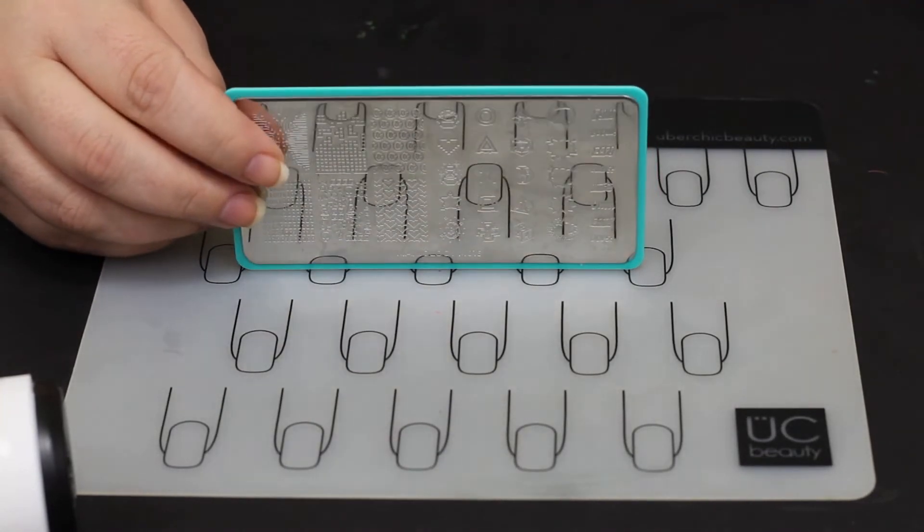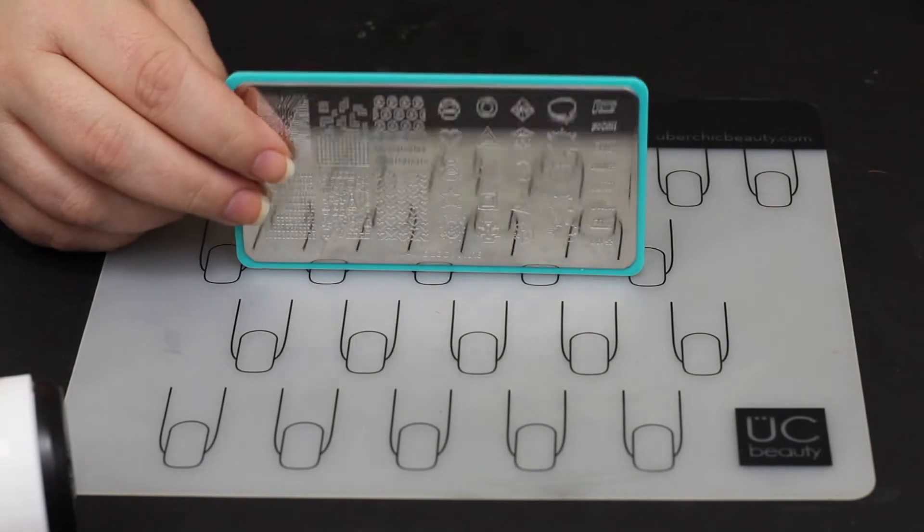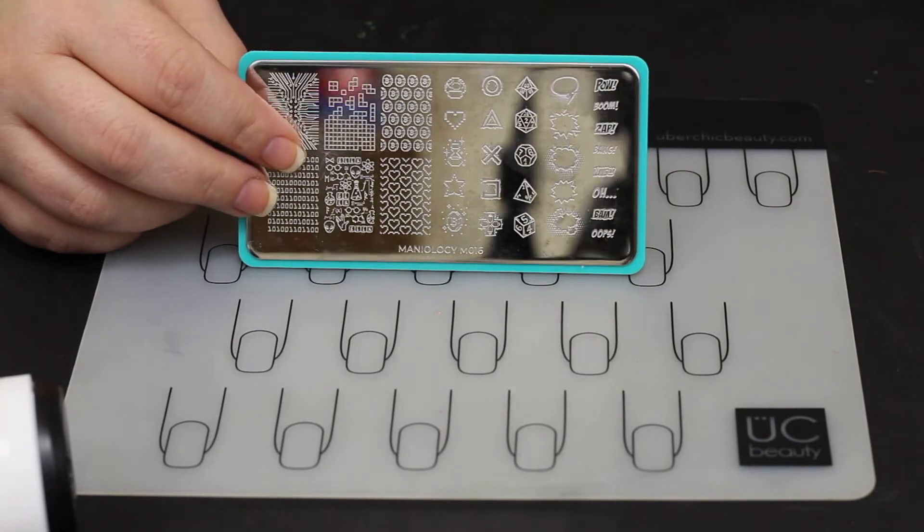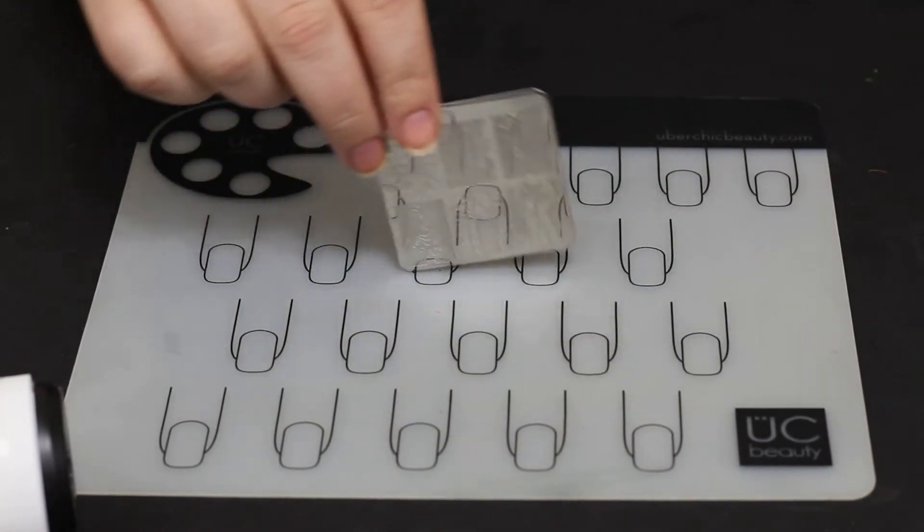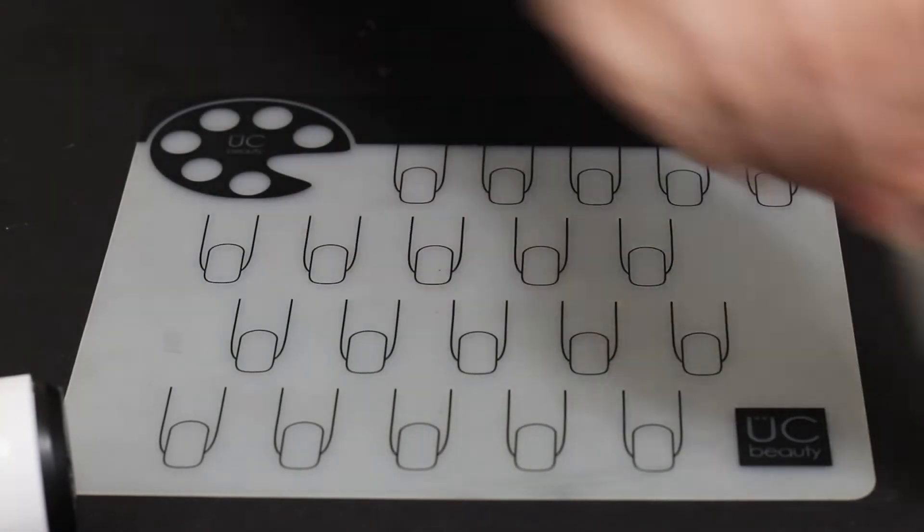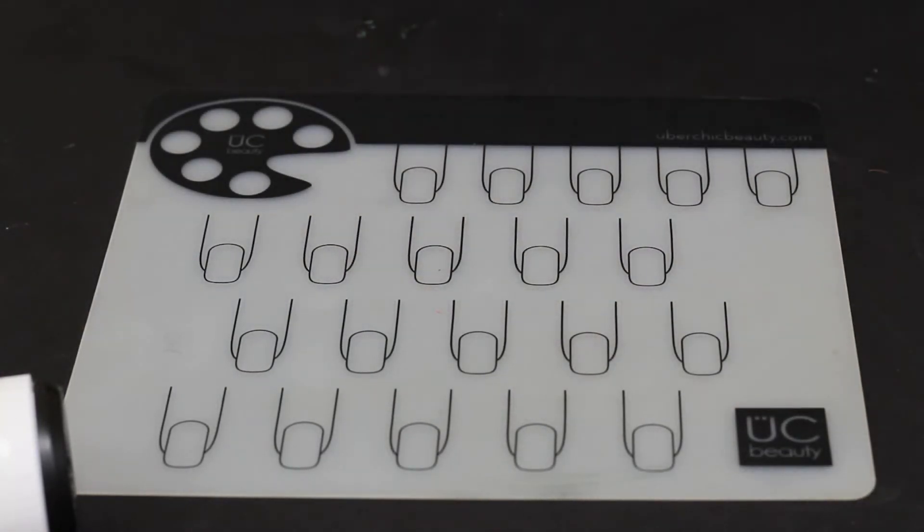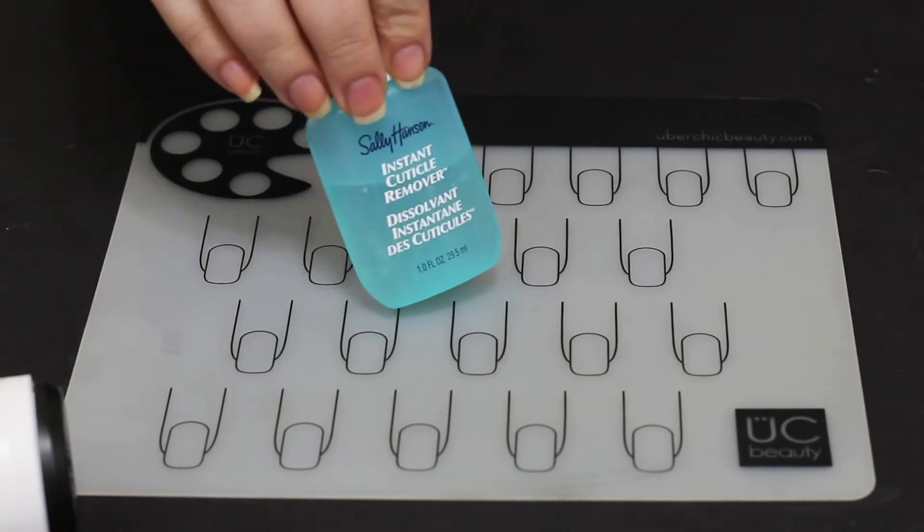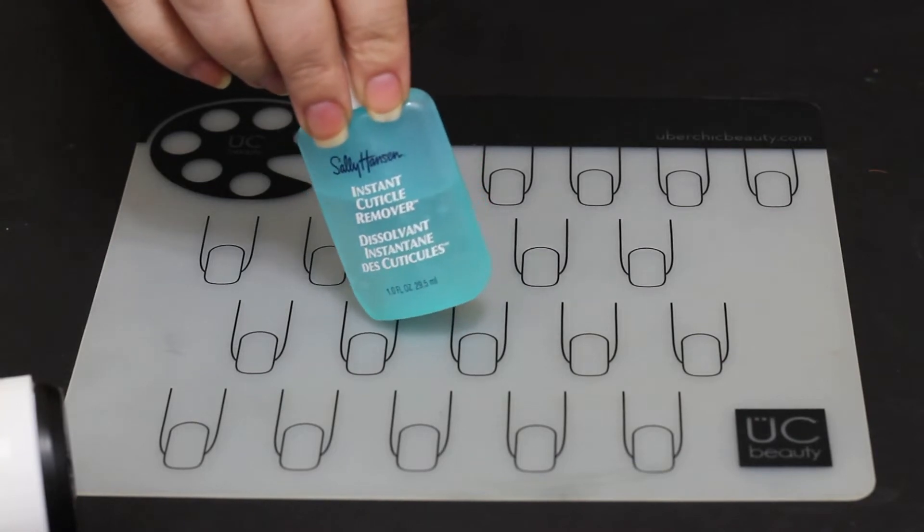And then after those different polish collections, of course, we have to go with stamping plates. For me, these are mandatory. I love stamping. Ever since I first saw it, I was like what is this and how do I do it? I have been obsessed from day one. And you can get different size stamping plates. They have giant ones that have a hundred patterns on them. I like the ones from Maniology, both the small square ones and the rectangle ones.